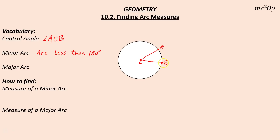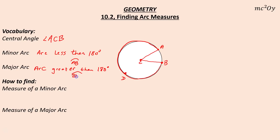In this case, arc AB appears to be a minor arc, and we use two letters to define a minor arc with an arc symbol above it. Versus a major arc — a major arc is an arc greater than 180 degrees. You use three letters to define a major arc, so I'm going to put a third point here. Arc BDA: if you trace the letters B to D to A, that is the name of that arc, and that arc appears to be greater than 180 degrees.